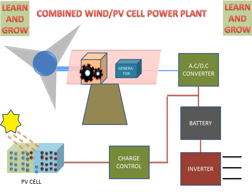This is the basic diagram of combined wind and photovoltaic cell power plant. Now we see the working of combined wind and PV cell power plant. What will happen?